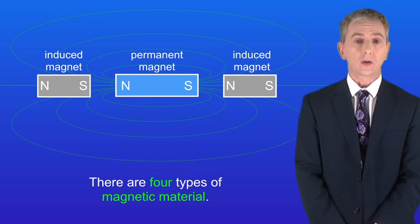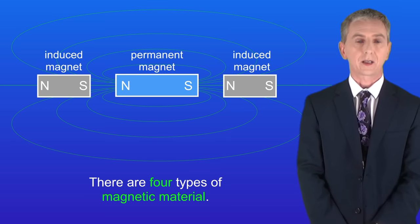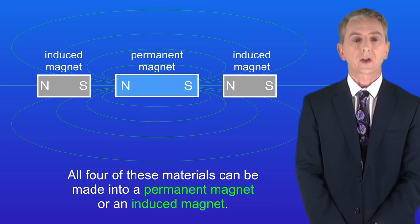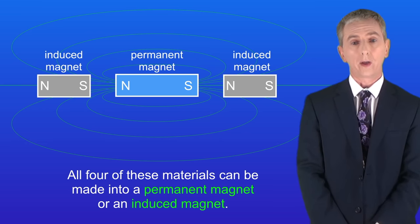Now a key fact that you have to learn is that there are four types of magnetic material. These are iron, steel which is an alloy of iron, cobalt and nickel. All four of these materials can be made into a permanent magnet or an induced magnet.